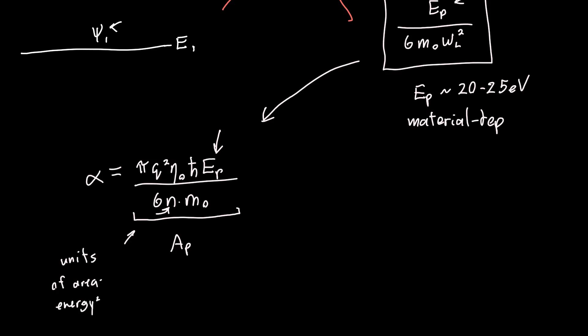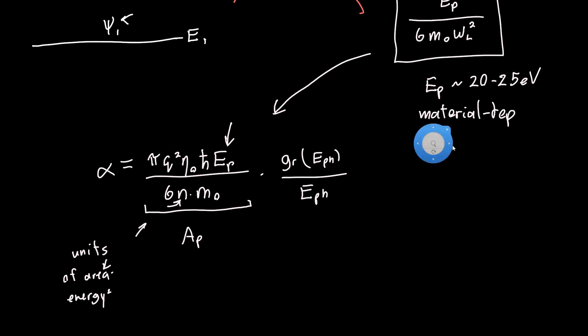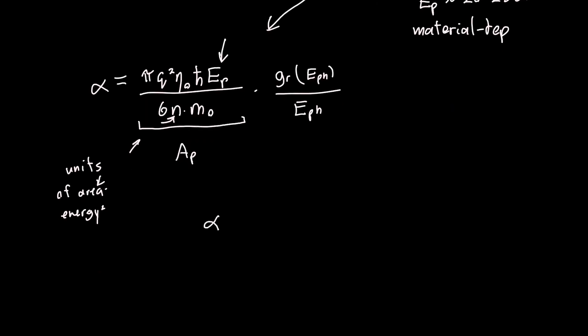I'm going to lump all of this into this single parameter called A_p, which is a material dependent parameter depending on the energy parameter E_p and the refractive index of the material. That's why I'm calling it A_p, because it's got an area in it. Then this is multiplied by our reduced density of states as a function of the photon energy, divided by our photon energy. So alpha as a function of the photon energy is just equal to this material dependent parameter A_p times the density of states as a function of photon energy divided by the photon energy.